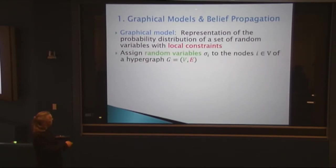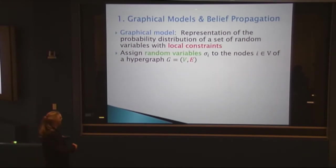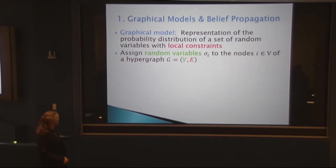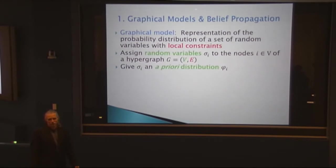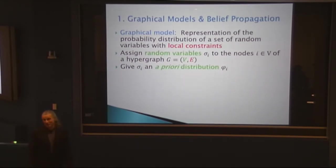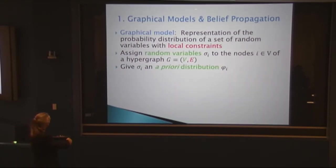You have a set of random variables — in this example, the colors of the shirts people are wearing. You assign those to the nodes of a graph, here representing being neighbors in this room, and in general a hypergraph. You give a prior distribution of colors: Jennifer would be heavily weighted to black, and I would normally be heavily weighted to red. But we have a constraint that red and black don't look good together, and in New York you're not supposed to wear red, so I'm wearing gray.